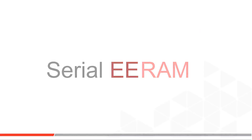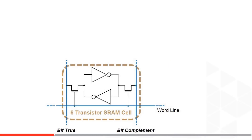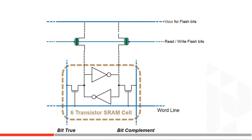EERAM is built around a standard 6-transistor SRAM cell. SRAM is volatile, so to make it non-volatile — meaning it will not lose its content on loss of power — a pair of floating gate transistors, just like those used in flash memory or EEPROM today, are placed right inside each memory cell. By using two floating gate transistors, these floating gates can store the true and complement value, naturally matching the true and complement values of each side of the SRAM bit.